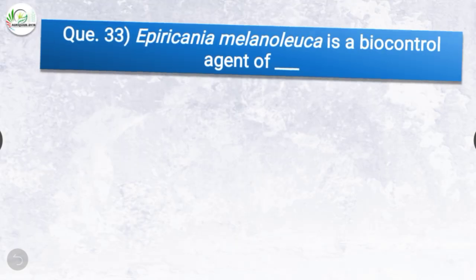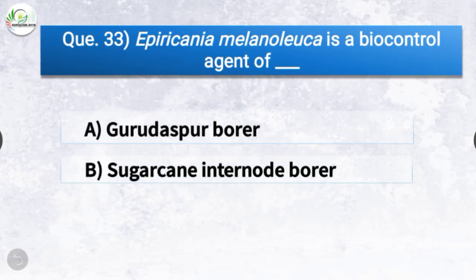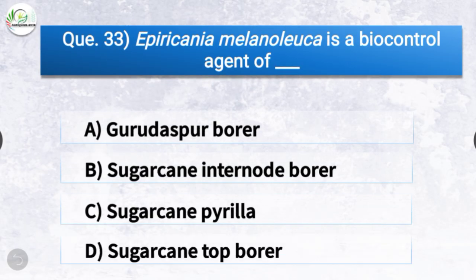Question number thirty-three: Epiricania melanoleuca is a biocontrol agent of? The options are Gurdaspur borer, sugarcane internode borer, sugarcane pyrilla, or sugarcane top borer. The correct answer is option C, sugarcane pyrilla — Epiricania melanoleuca is a biocontrol agent of sugarcane pyrilla.